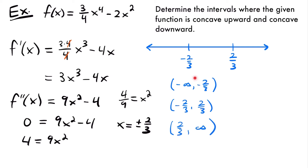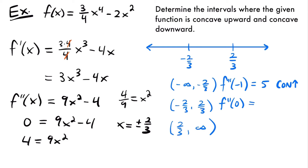Now we're going to pick values between the endpoints of our intervals and test them on our second derivative to see if they are positive or negative. For our first interval, I'm going to pick negative 1. So f double prime of negative 1 equals 9 times negative 1 squared, and negative 1 squared is positive 1, so 1 times 9 is 9, minus 4 will be 5. That is a positive value, which means our function is concave up. Then for our second interval, I'll pick 0. F double prime of 0 equals 9 times 0 minus 4, which is negative 4, a negative value, so our function is concave down on that interval.